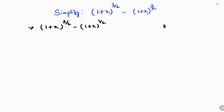Here, 3 by 2 can be written as 1 plus 1 by 2. So the expression becomes (1 + x) whole power 1 plus 1 by 2, minus (1 + x) whole power 1 by 2.